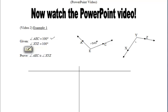The first thing that we're given here is that angle AEC is 100 degrees. Get in the habit of marking up your diagrams. In the end, we want to prove that those two angles, AEC and XYZ, are congruent.